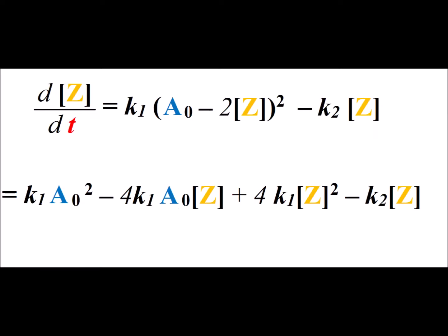For dZ dt, we have in the forward direction k1 times the concentration of A, which is A sub 0 minus 2 times the concentration of Z squared, minus k2 times the concentration of Z. And then, if we expand out the quantity in the parentheses, we get k1 A sub 0 squared minus 4k1 A sub 0 times Z plus 4k1 concentration of Z squared minus k2 times the concentration of Z.